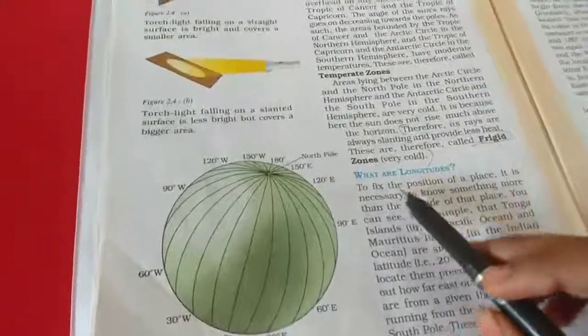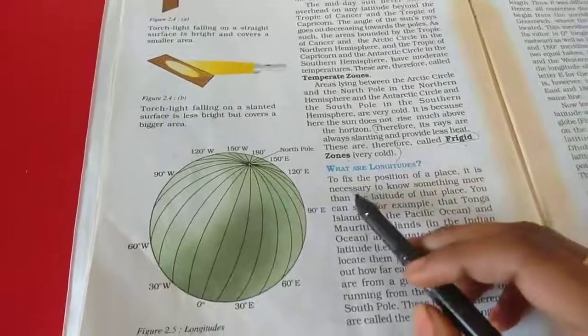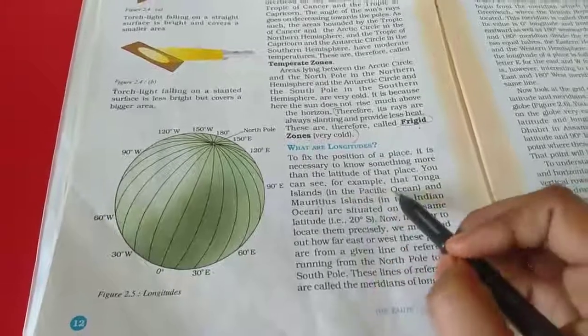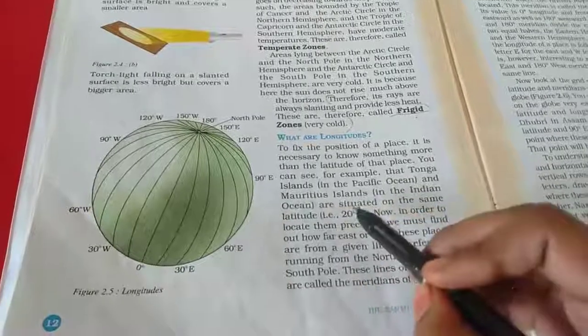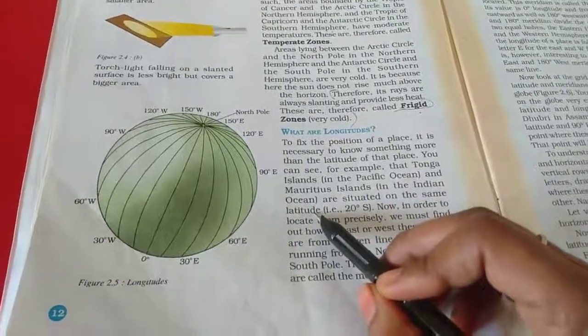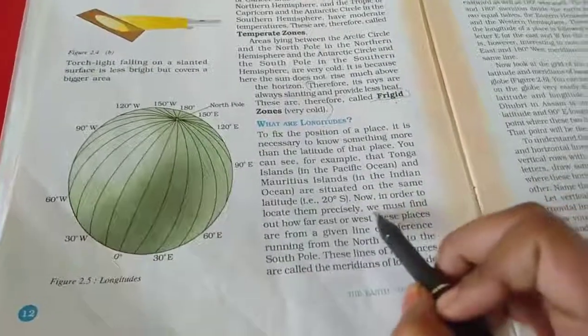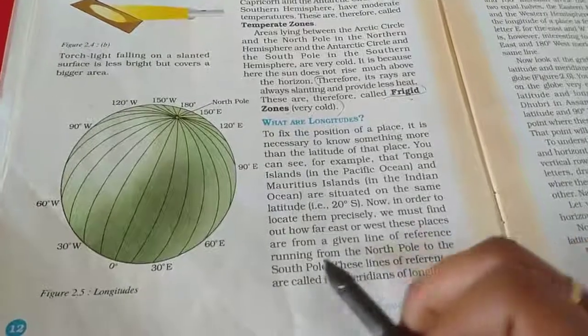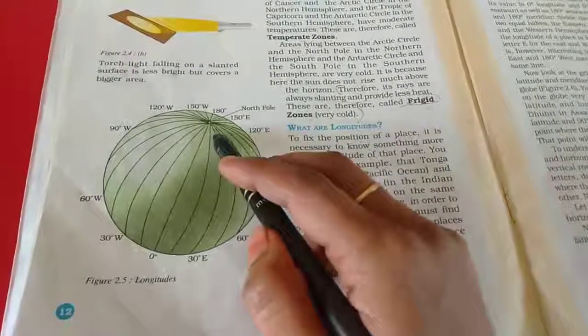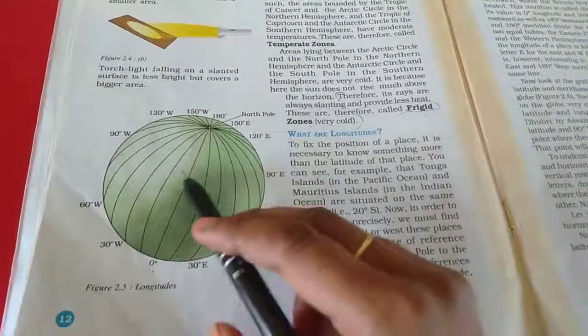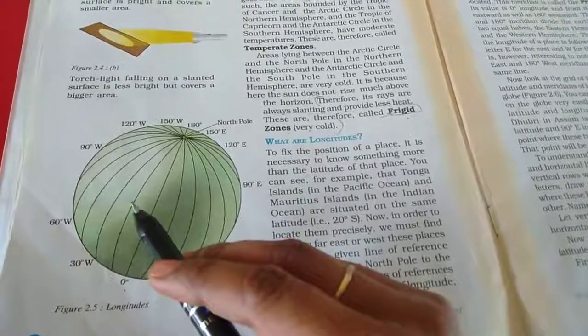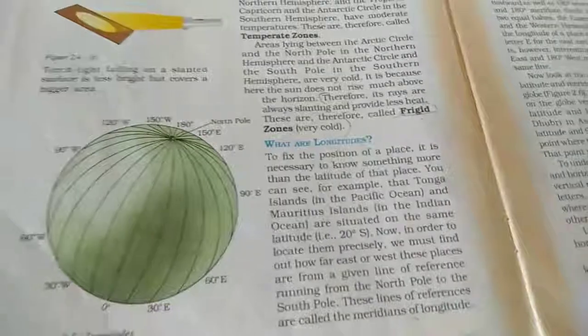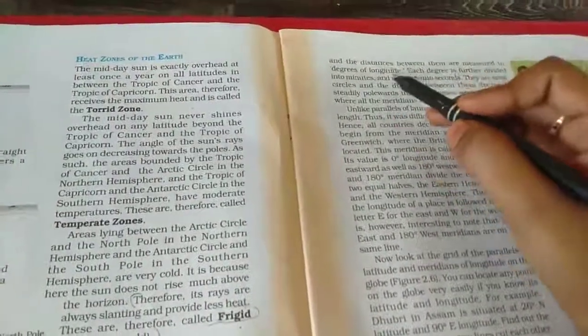What are longitudes? To fix the position of a place, it is necessary to know something more than the latitude of that place. You can see for example that Tonga Island in the Pacific Ocean and Mauritius Island in Indian Ocean are situated on the same latitude, 20 degrees south. Now in order to locate them precisely, we must find out how far east or west these places are from a given line of reference running from the North Pole to the South Pole. This is North Pole, this is South Pole. For 20 degrees south, we can see Tonga Island and Mauritius Island. These lines of references are called the meridians of longitude and the distance between them are measured in degrees of longitude.